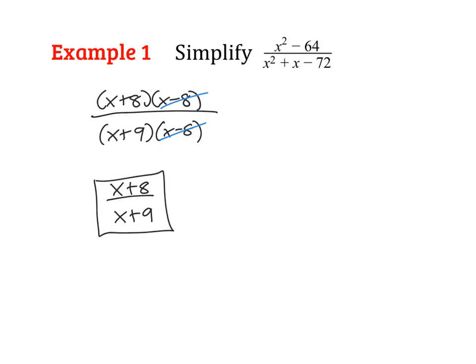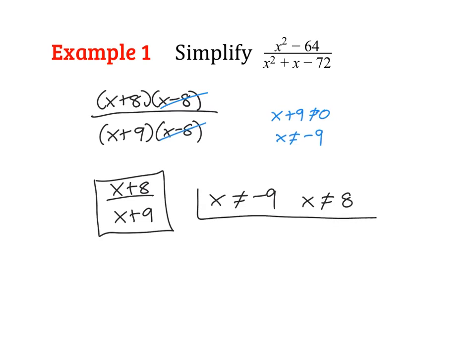As discussed with domain restrictions, we need to list what X cannot be. We do need to include factors that cancelled out, even if they're no longer in our final answer. Since the denominator can't equal zero, X cannot equal negative 9 and X cannot equal positive 8. A trick for that is to apply zero product property to your denominator: X plus 9 cannot equal 0, so X cannot equal negative 9. Do the same for the other factor. Please make sure to list your restrictions.